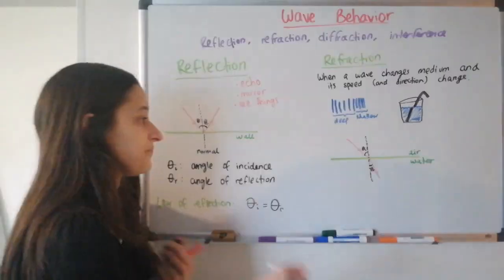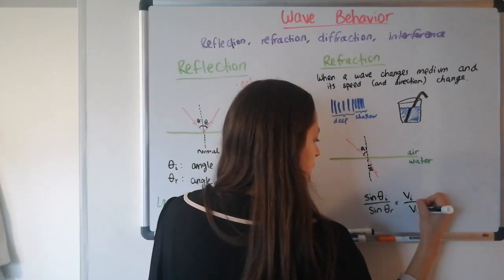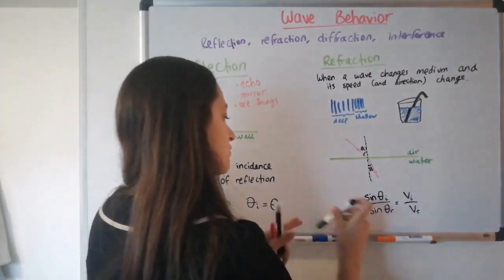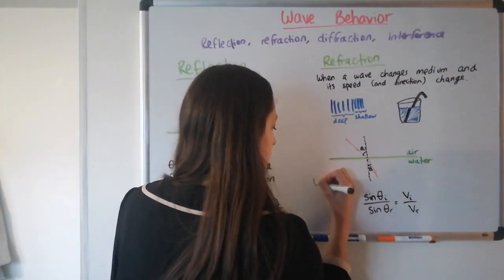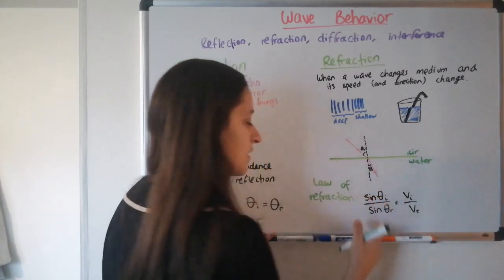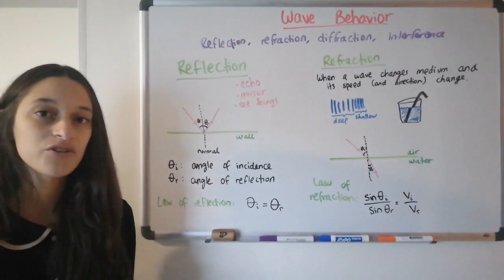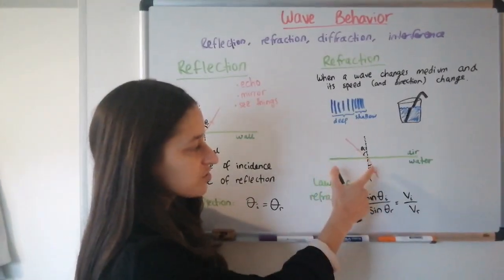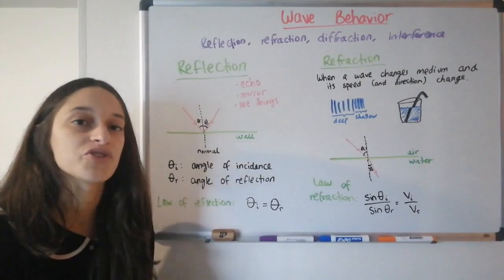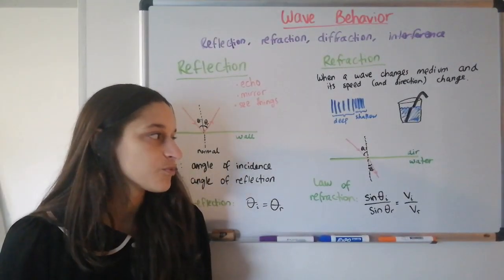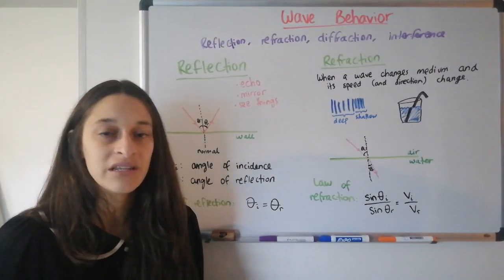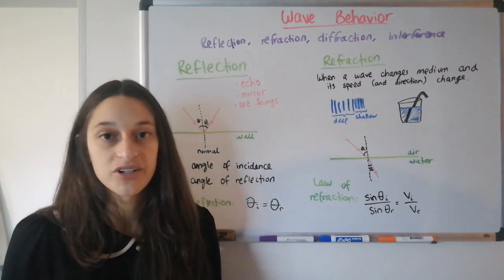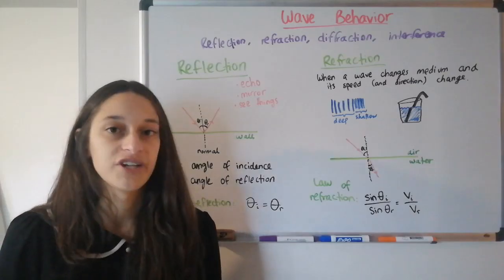Refraction follows a different equation than the law of reflection — the angle is not going to be the same. We have an equation called the law of refraction that relates the speed in one medium with the speed in the other and the two angles. The angle is proportional to the speed: the greater the angle, the faster the speed; the smaller the angle, the slower the speed. When we study light, we'll look at what this depends on and its applications in modern technology.